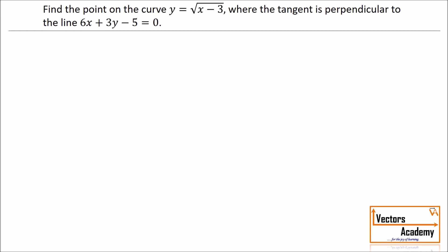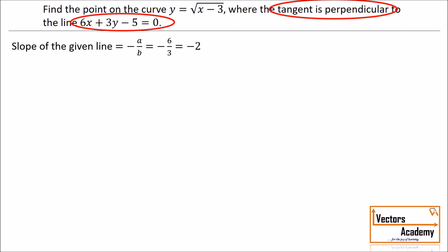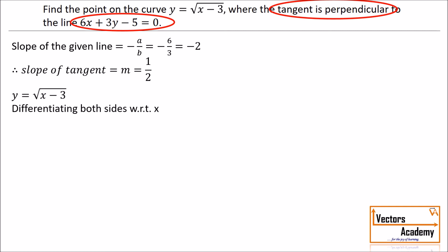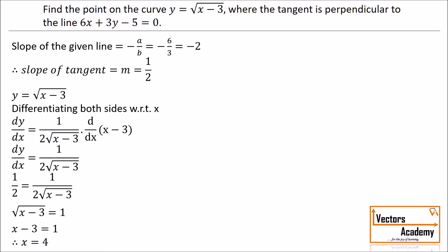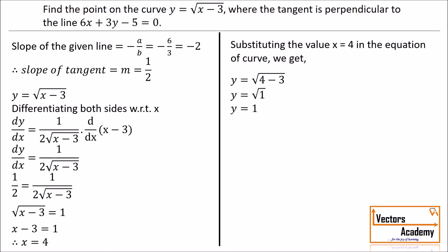In this question, we find the point on the curve where the tangent is perpendicular to a given line. The slope of the given line is −2, so the slope of the tangent (being perpendicular) is 1/2, its negative reciprocal. We differentiate the curve equation and set dy/dx = 1/2. Solving gives the value of x, which we substitute back into the curve equation to get y. The required point where the tangent is perpendicular to the given line is (4, 1).